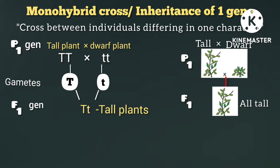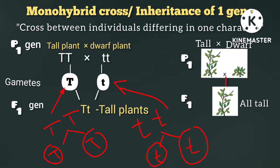This is the P1 genotype. These are the parent gametes — in sexual reproduction, gametes are haploid. The tall plant produces capital T gametes, and the dwarf plant produces small t gametes.